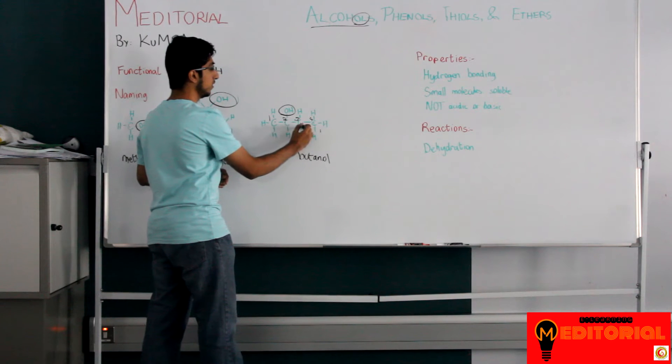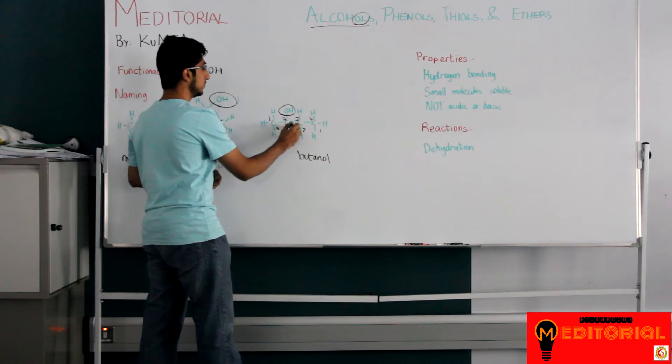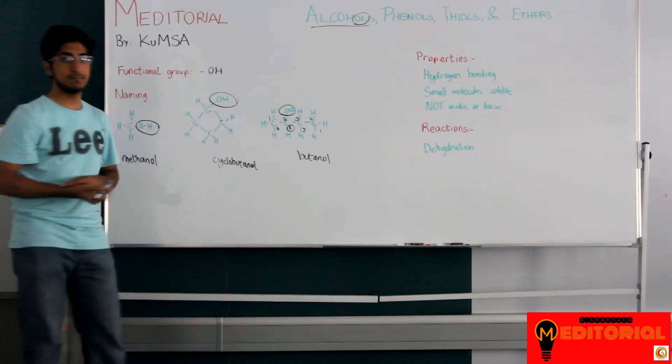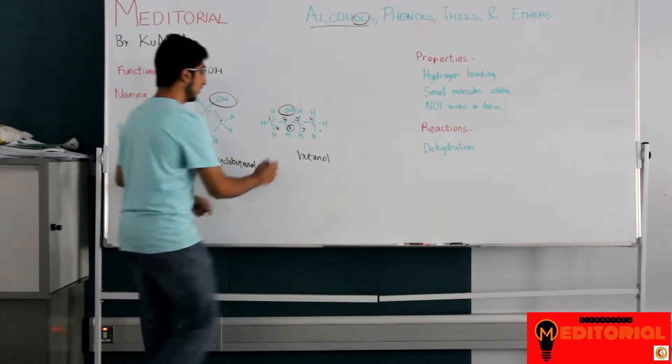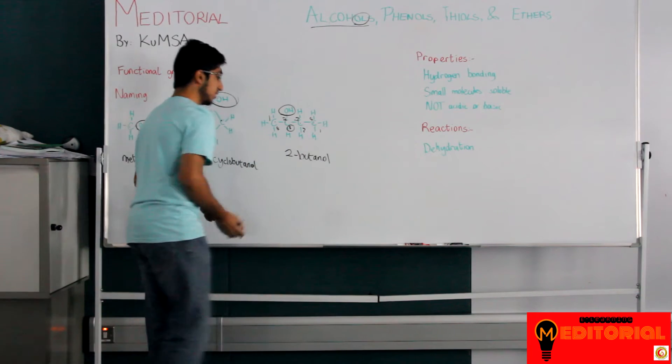If I start from this side, one, two, three, four. In this case, it becomes three, which is not what we want. We want to try and get the least number possible. So this becomes 2-butanol.